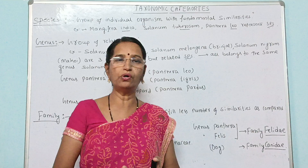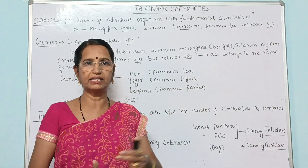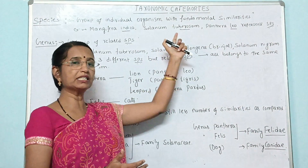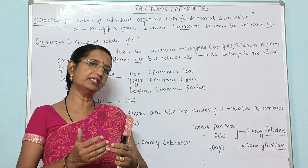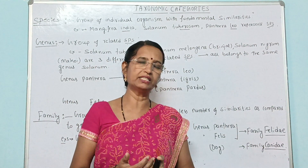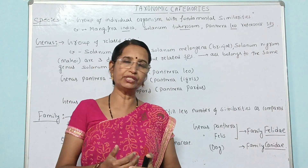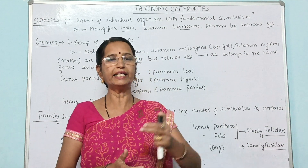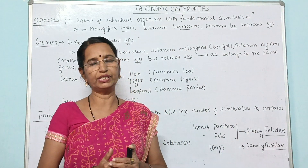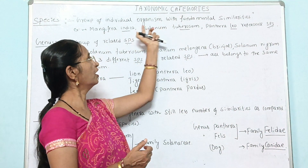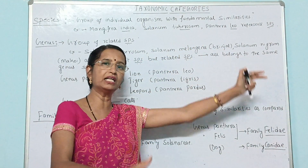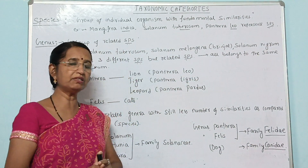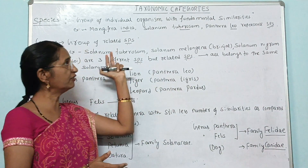Let us learn the first taxonomy category, which is the lowest taxon in the classification — that is species. Species can be defined as a group of organisms with fundamental similarities. In other words, species is a group of organisms which can interbreed among themselves and produce a fertile offspring. The basic characters are almost similar — that is called species.